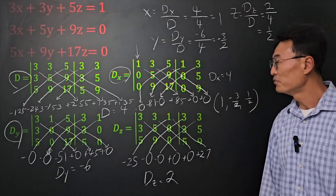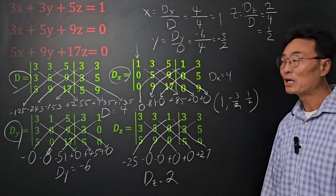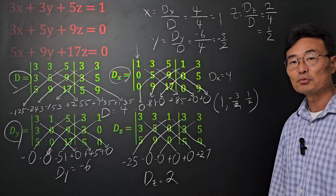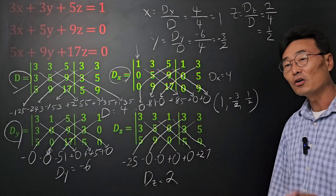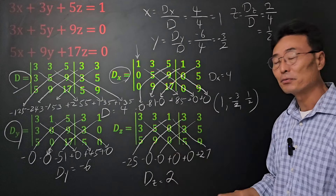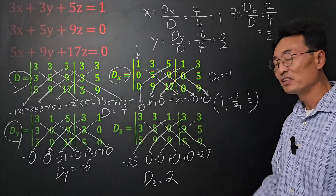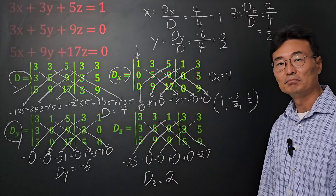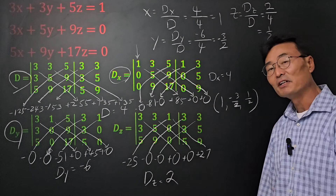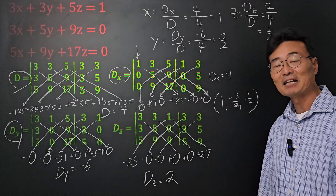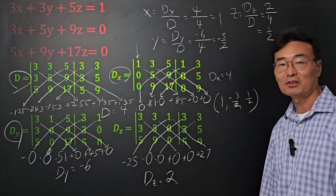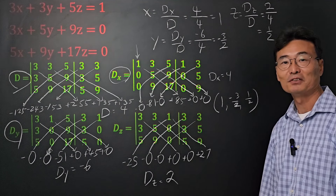I hope this video showed you how to find three variables using Cramer's rule, and also how to find the determinant of a 3 by 3 matrix using this shortcut. If you enjoyed this video, please give it a thumbs up and subscribe. Thank you, as always, for watching.